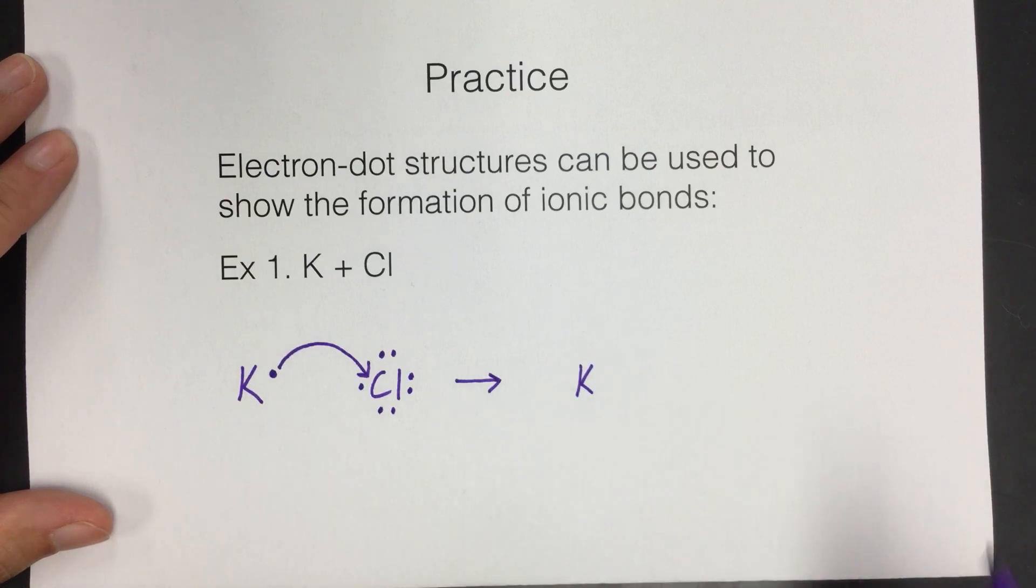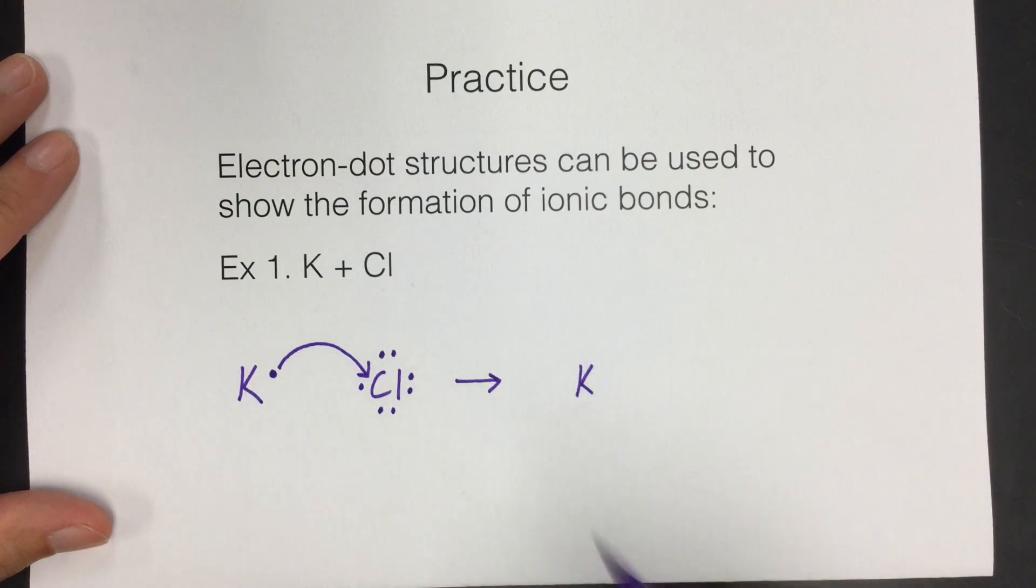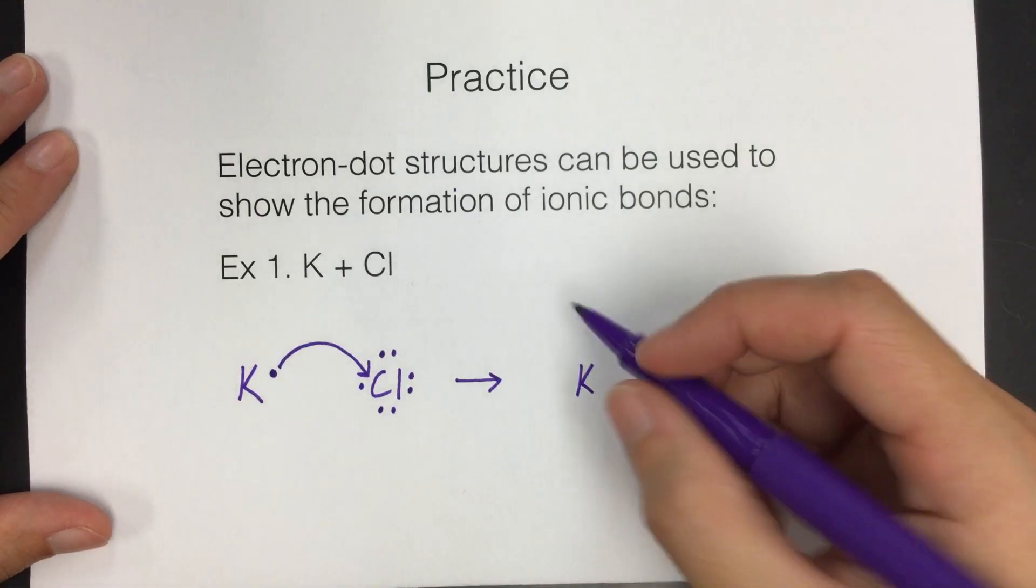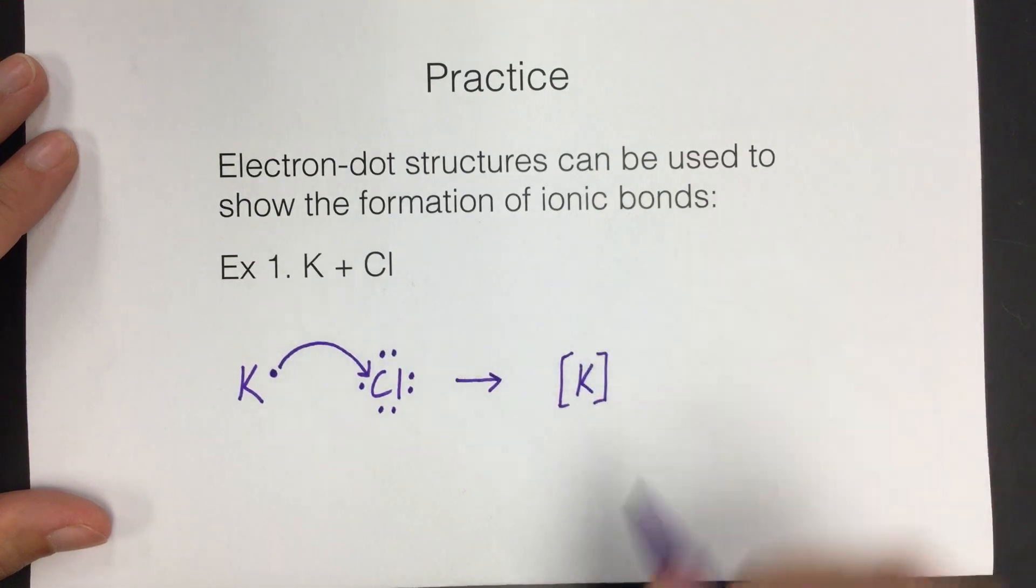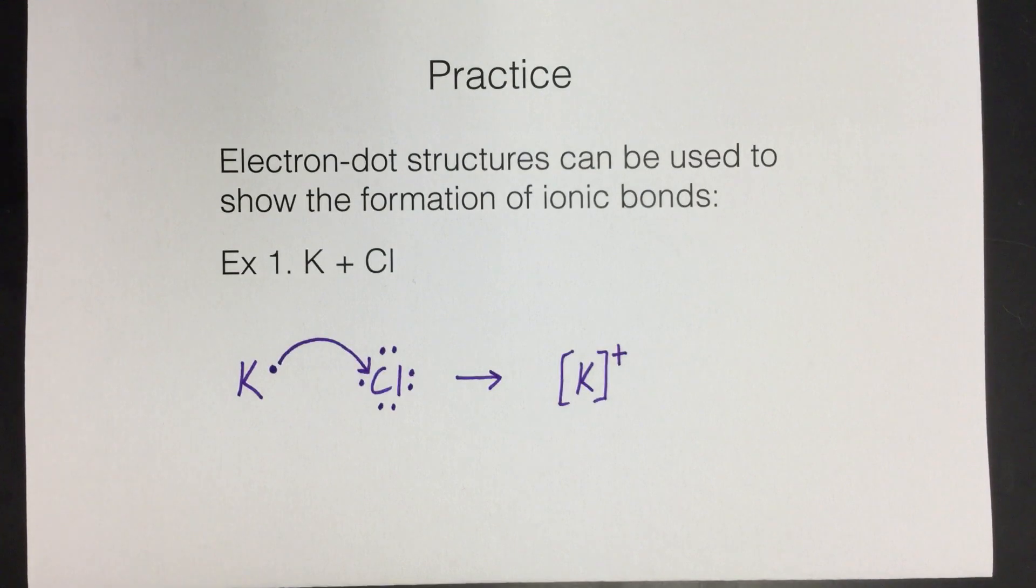And now that it's given up an electron, it has a charge. If you remove one electron, what will be the new charge if you just lost an electron? So hopefully you know that it will be a positive charge. And if something has a charge, we need to put brackets around it. So now we have the naked potassium, and it has a charge of one. We don't write the one, so it's just K plus, but you have to have those brackets.